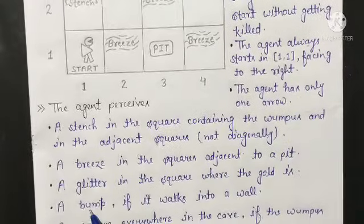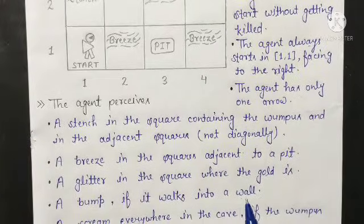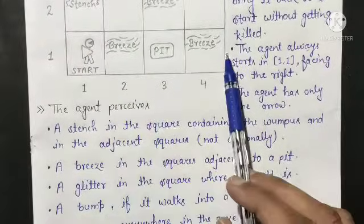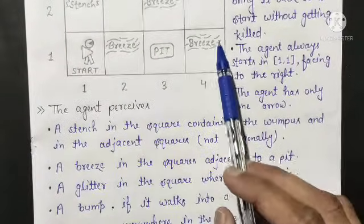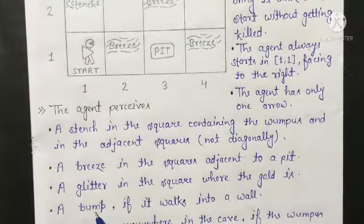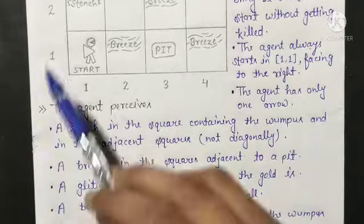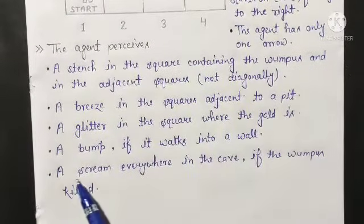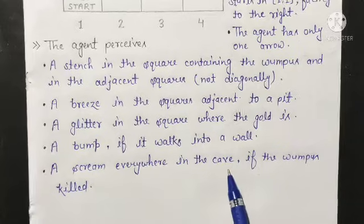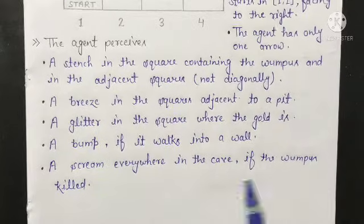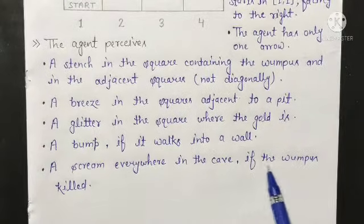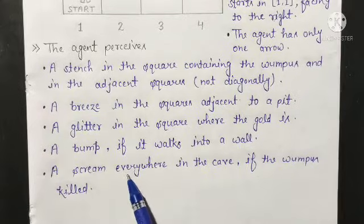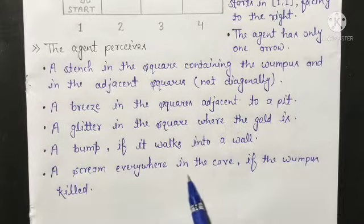A bump, if the agent walks into a wall — then a bump sound can be heard over the cave. A scream everywhere in the cave if the Wumpus is killed. If the Wumpus is killed, a scream can also be heard everywhere in the cave.